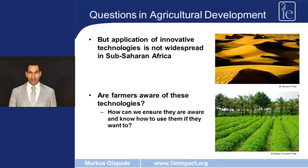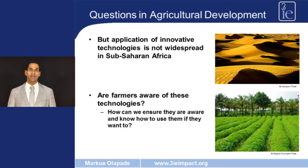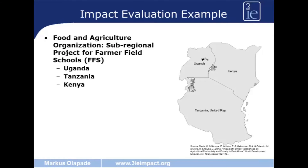Now if awareness is the problem, how do we make sure that agricultural knowledge is brought to the farmers such that they can use these new innovations? The Food and Agriculture Organization implemented a farmer field schools project in East Africa that I am going to use as a specific example in this lecture.